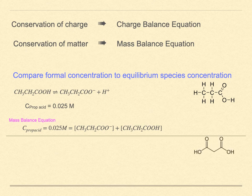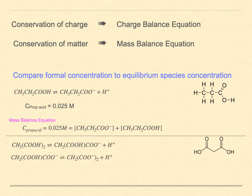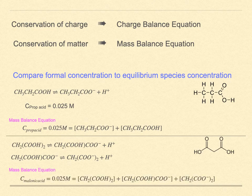Another example would be with malonic acid. Note that it has two acidic sites. We might also add sufficient acid so that the solution would formally be 0.025 molar in malonic acid. The mass balance equation, however, would be this. We now have three species between which the acid will be distributed.